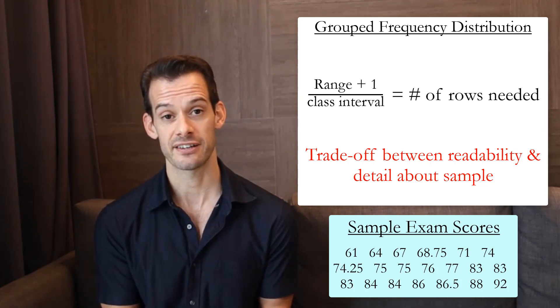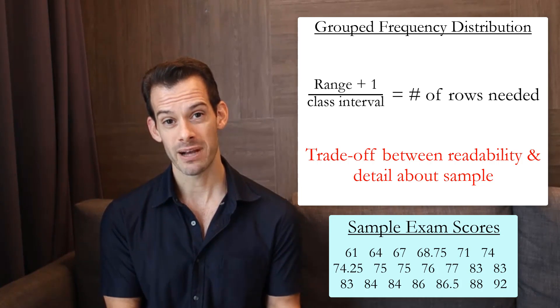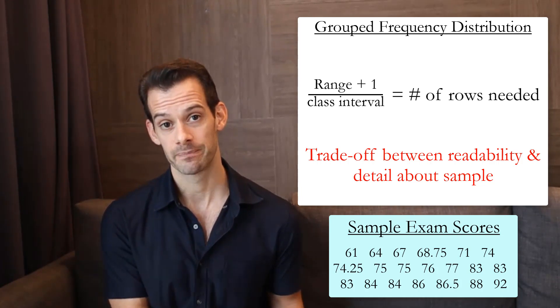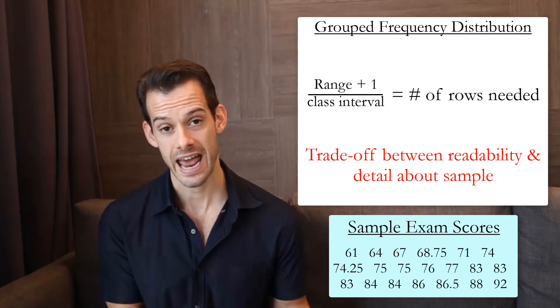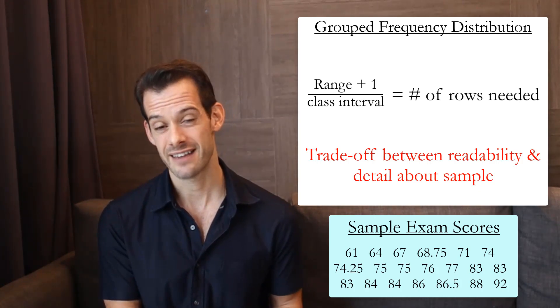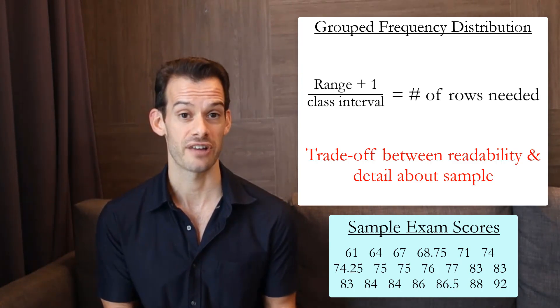For example, we could choose a class interval of 10 here and then we'd only need 4 rows. But we might start thinking that we're grouping scores together that maybe shouldn't be grouped together. So if we had a class interval of 10 then we might start thinking that the difference between a score of 70 and 79 is fairly large and so we probably shouldn't be treating those scores as if they're the same.